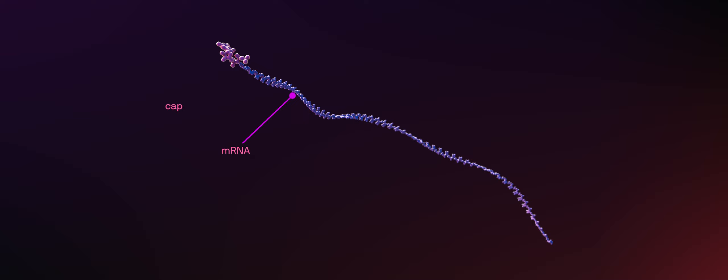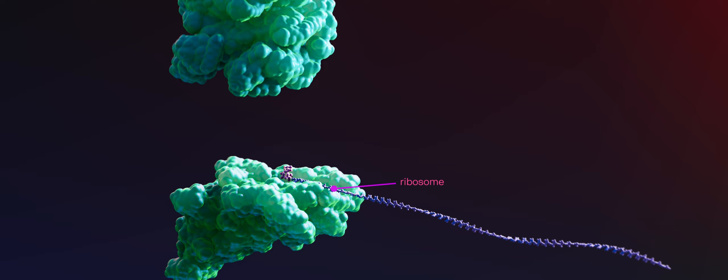Traditionally, proteins are encoded and made from messenger RNA. In order to be expressed as a protein, mRNA engages with a protein factory called the ribosome. This interaction is initiated by a cap on one of the ends of the mRNA.